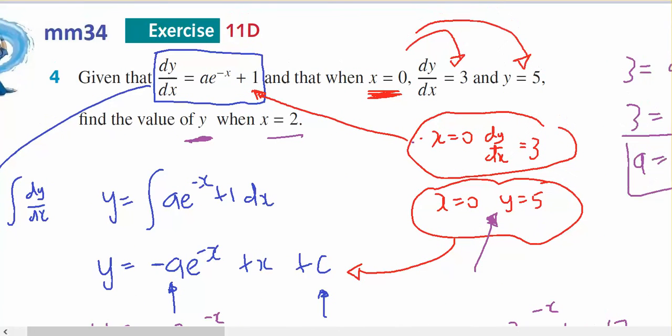So to go back to the question, I was given two pieces of information here. When x equals 0, dy dx equals 3 and y equals 5. So this piece of information will go into the equation that is dy dx equals. And this piece will go into the equation y equals.